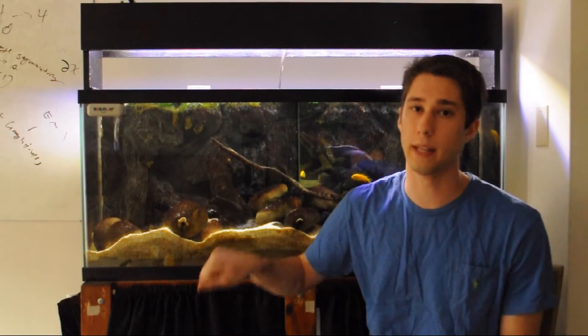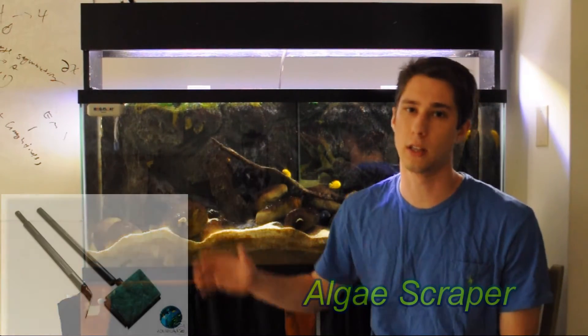Another very handy thing to combat algae is something like a mag float. It's magnetized so you can just move around on the outside of the aquarium and clean up any algae on the glass.